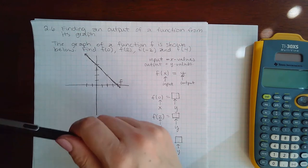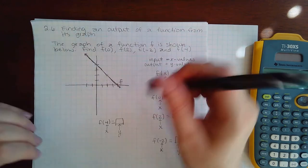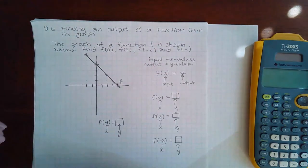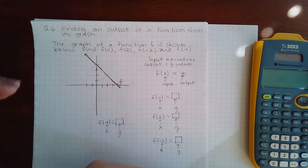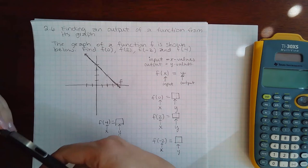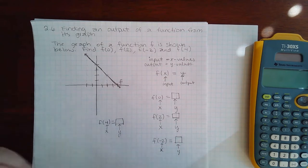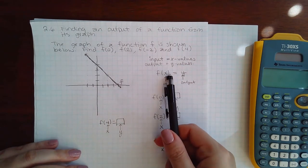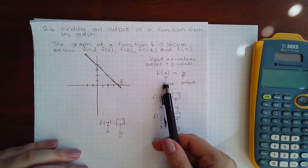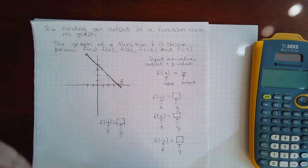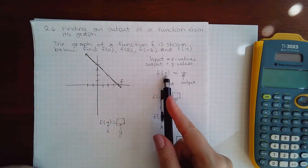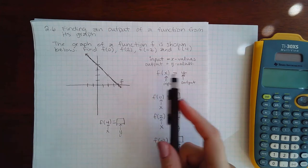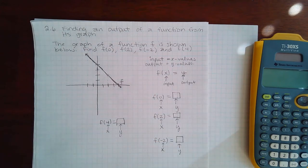Before we begin, it's very important to understand that the input is the x value. That's what you would plug in if you were given the function explicitly as the equation, to compute the y values. So the y values are the output. In this notation f(x), x is the input and the output is the y value. We already know that this is just a fancy way of labeling the y coordinate.